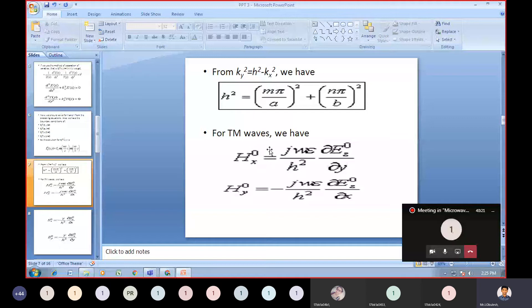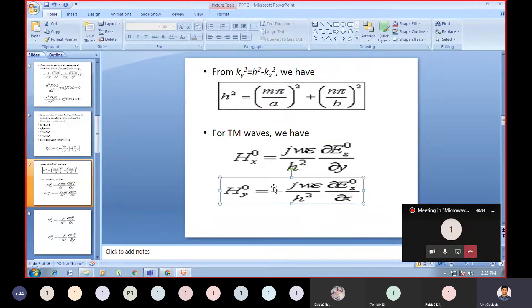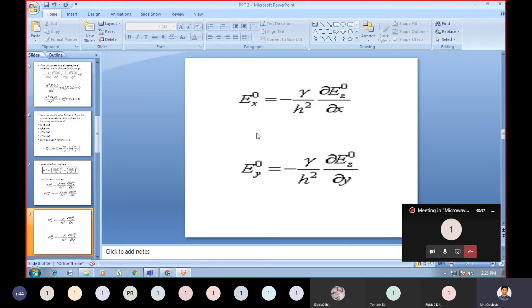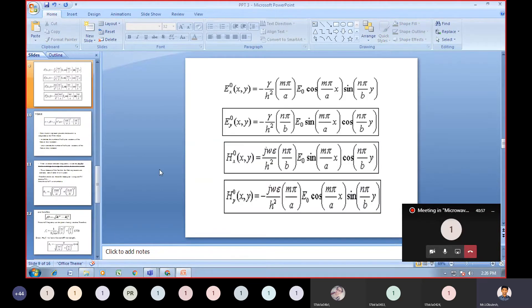In the x and y directions, the magnetic field vectors are given by these expressions. The electric field expressions for x and y directions are minus gamma divided by H² times dE_z/dx for the x component, and similarly for y, with dE_z/dy. These are the expressions you need to remember.